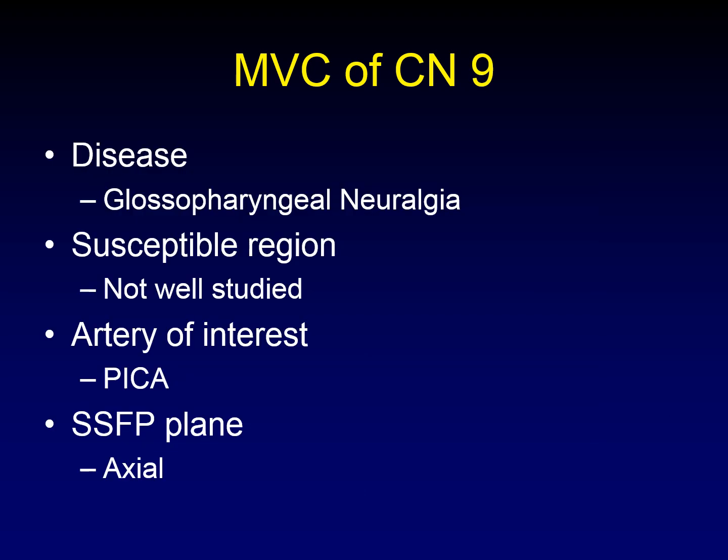How about the ninth cranial nerve? When microvascular compression affects CN IX, the disease is glossopharyngeal neuralgia. The susceptible region of the ninth cranial nerve is not as well studied as the fifth and seventh; it's probably most of the cisternal segment. The artery of interest is usually the posterior inferior cerebellar artery. The most useful plane of imaging is the axial plane — in my experience more helpful than sagittal.